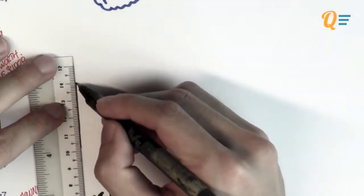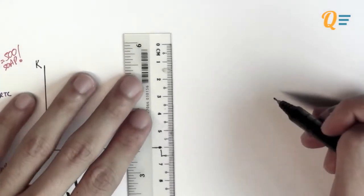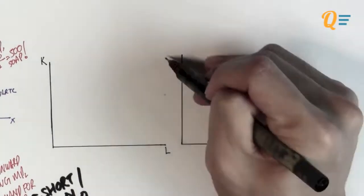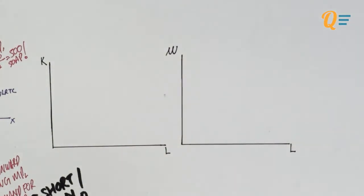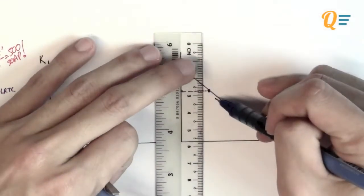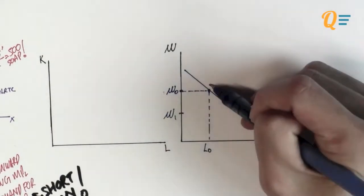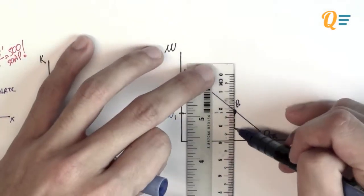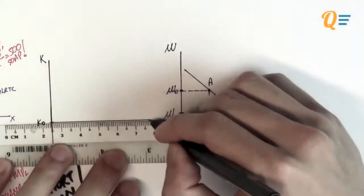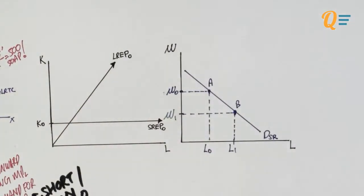Now, what does the demand curve for labour look like in the long run? To understand this fully, you'll need the isocost and isoquant curves. In the short run, say the real wage is at W0 and the firm hires L0. When the nominal wage falls, the real wage drops to W1, and the firm moves to point B, hiring more labour at L1 — cheaper labour means more hiring. In the short run, capital is fixed at K0, giving us the short-run expansion path.